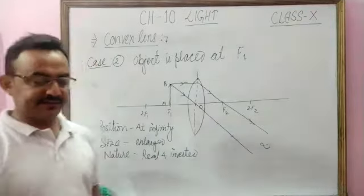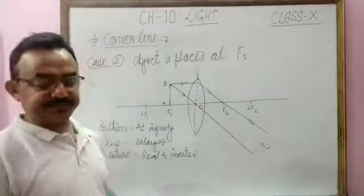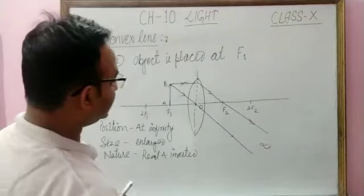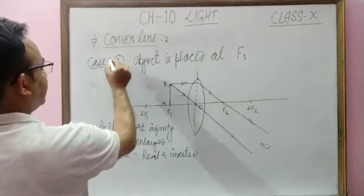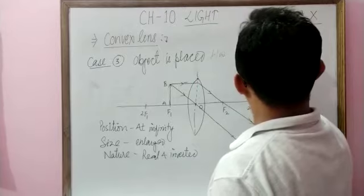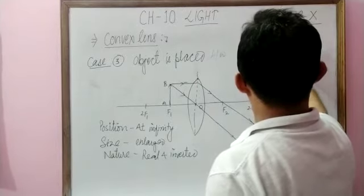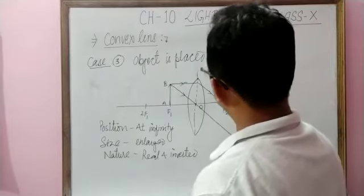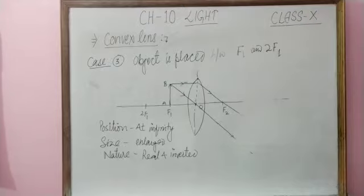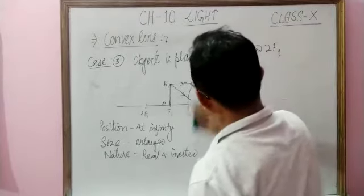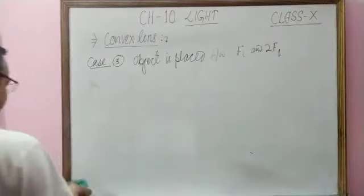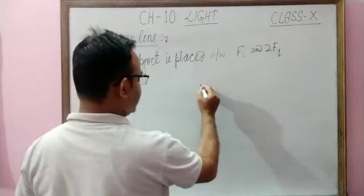Third case is here: when object is placed between F1 and 2F1. You have to draw the ray diagram for this case.